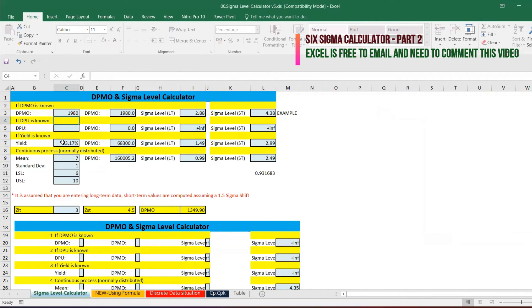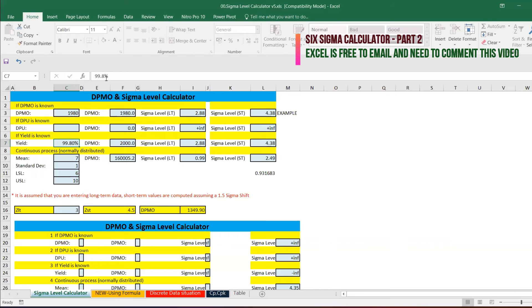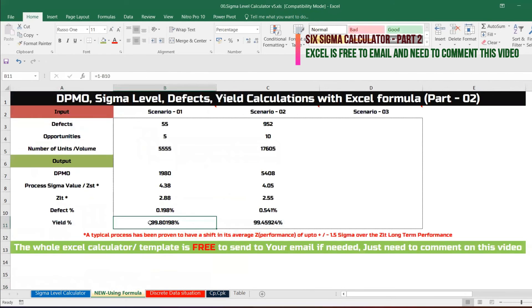Cross multiply also you can do. I'm just going here yield 99.80198, and 4.38. However, to find out the defect percentage, this is the formula, and yield is 1 minus that defect percentage.